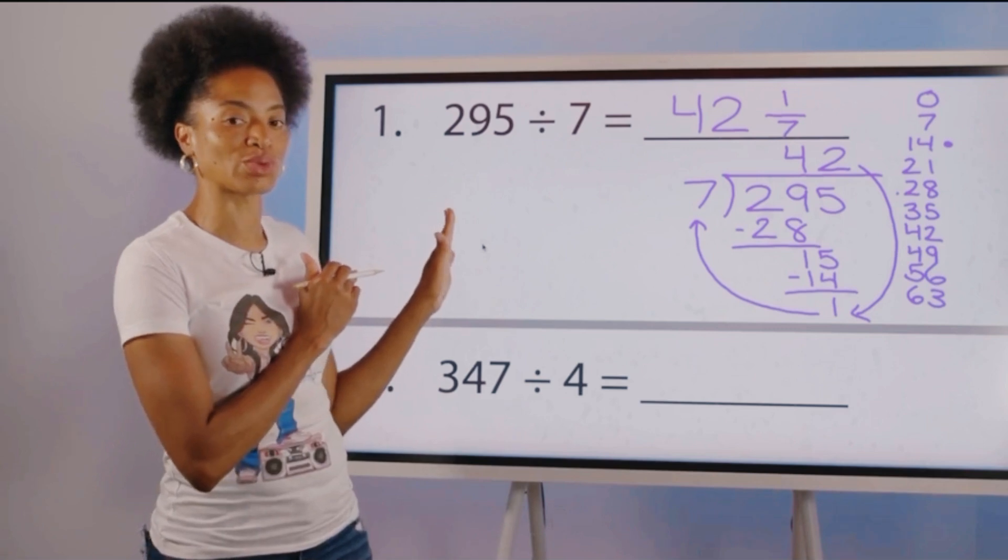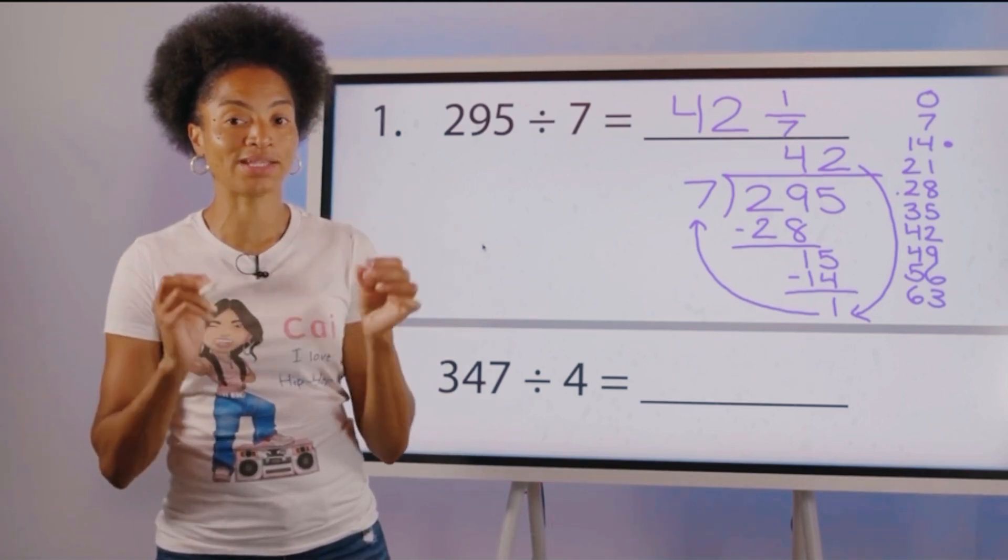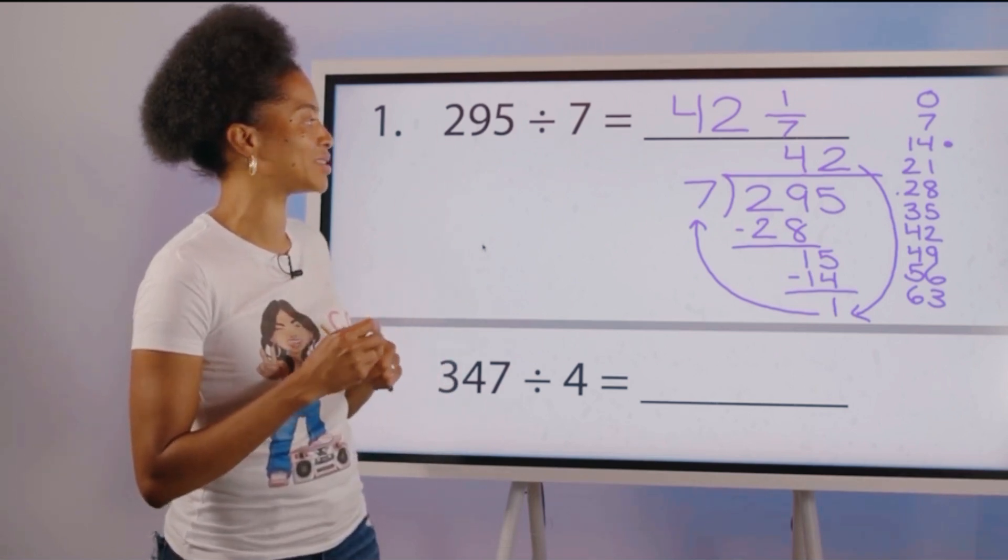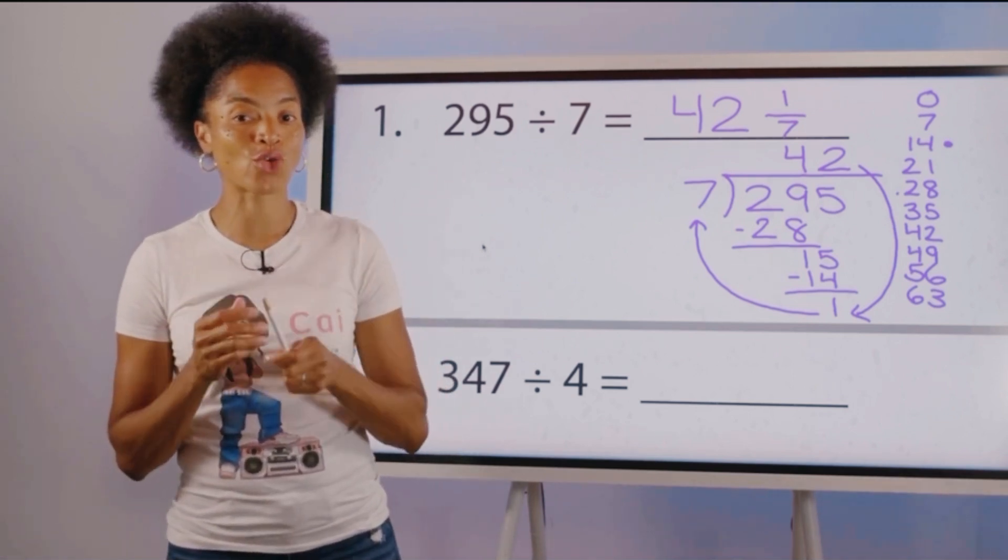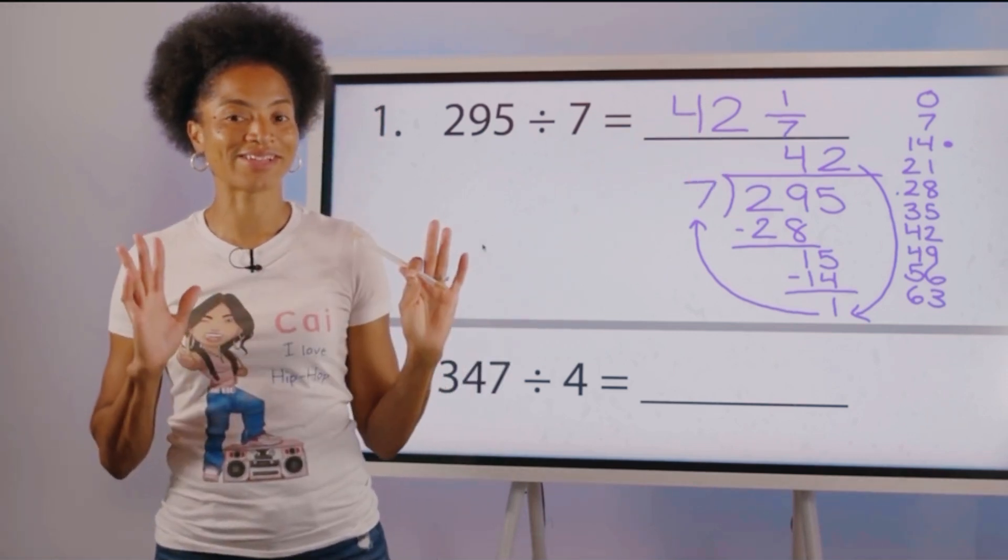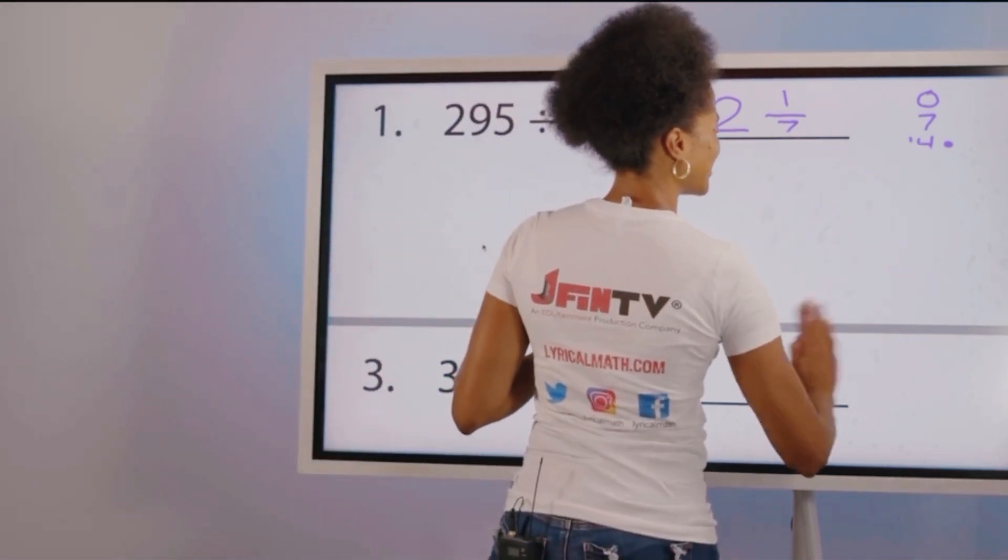Make sure you have this written down nice and neatly inside of your student workbook. Again, if you need additional scrap paper, you can use page 27. So 295 divided by 7 equals 42 and 1/7. Looking great, I think we're on to something. Let's check out number 2.